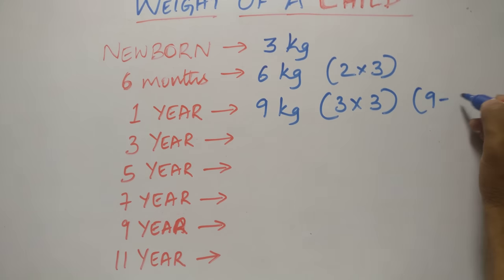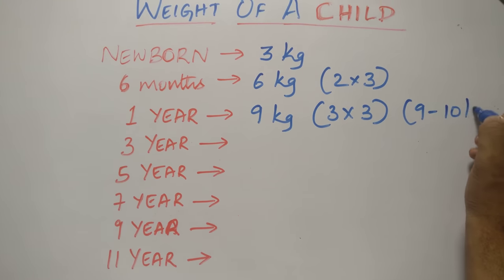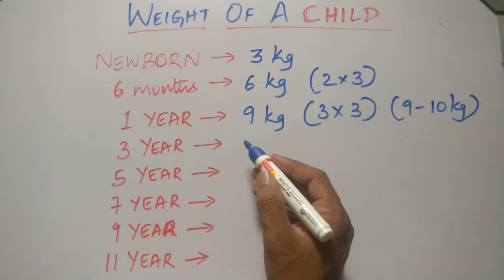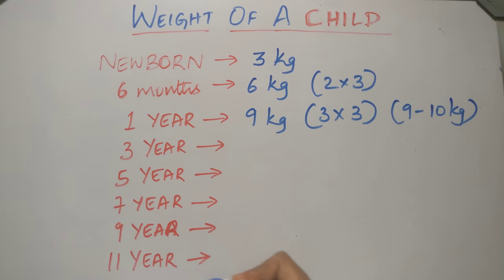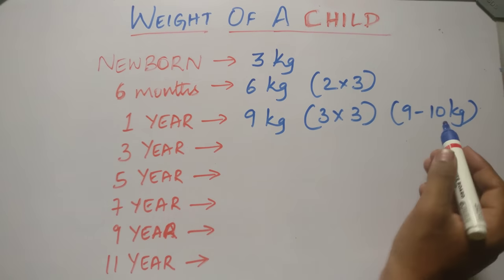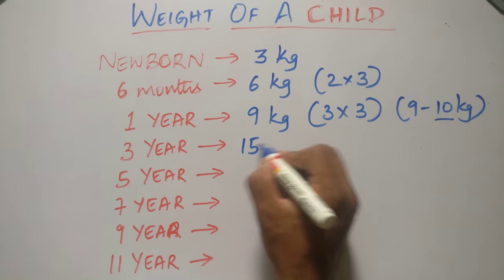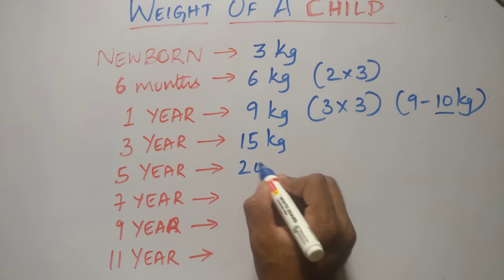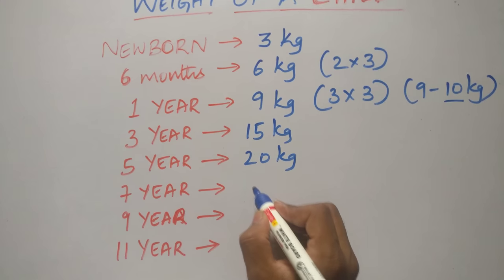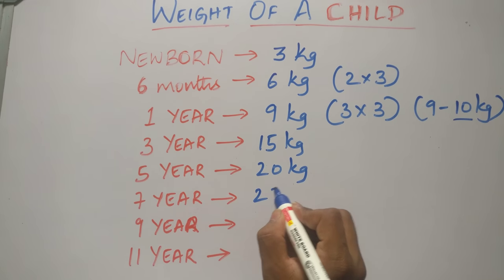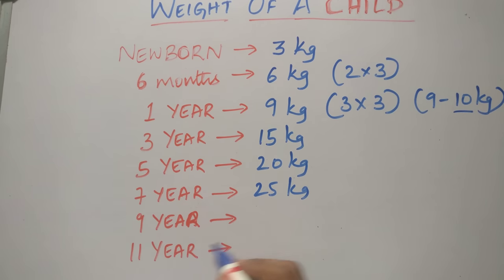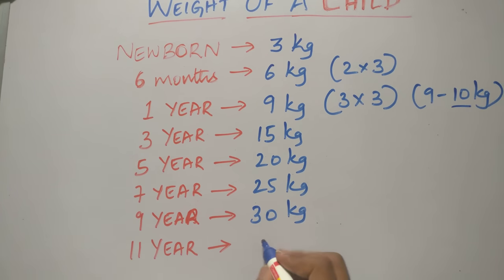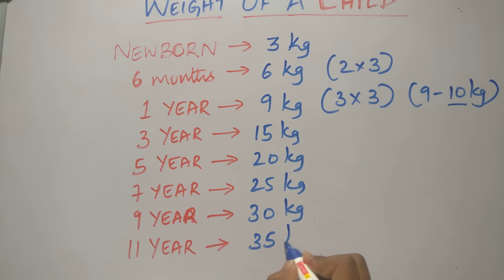Let us take it as 9 to 10 kgs. And from here, just add 5 kgs. At 3 years it will be 15 kgs. At 5 years it will be 20 kgs. At 7 years it will be 25 kgs. At 9 years it will be 30 kgs. At 11 years it will be 35 kgs.